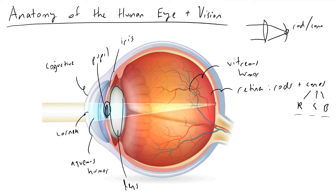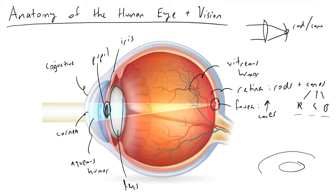A key part of the retina that a lot of optometrists and people care about is this little dimple region here, which is called the fovea. The fovea is the area that has your highest visual acuity because it has a very high concentration of cones. The very center of where you're looking is the area in which the light rays are hitting your fovea. This region is where you can see most clearly when you're focusing on something — those photons emanated from that source are what's striking your fovea.